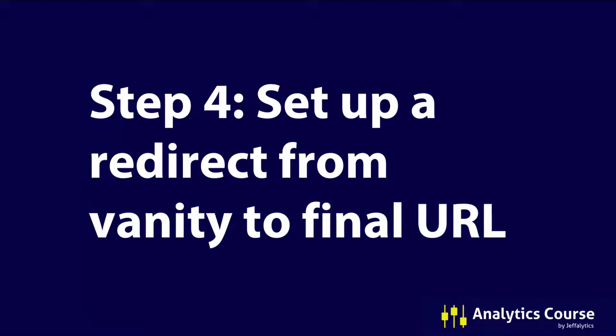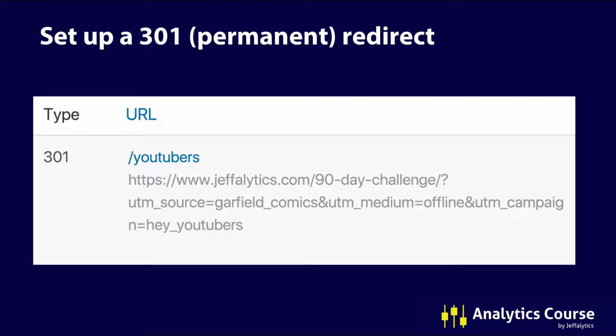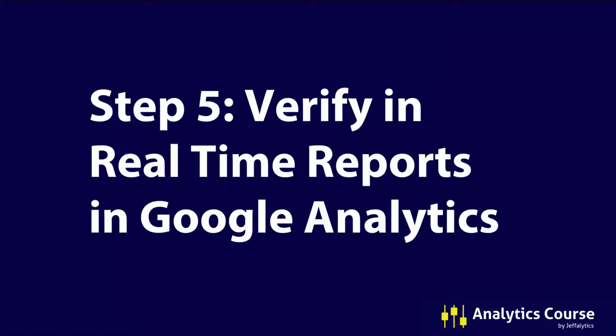Step four: set up a redirect from your vanity URL to your final URL. In my WordPress site I use a 301 permanent redirect — from jefflytics.com/youtubers — to the full UTM-tagged URL I copied from the Campaign URL Builder, which points to jefflytics.com/90-day-challenge with the Garfield comics source, offline medium, and 'hey youtubers' campaign. Whenever somebody goes to jefflytics.com/youtubers, they'll land on the right page and it will be tracked in Google Analytics.